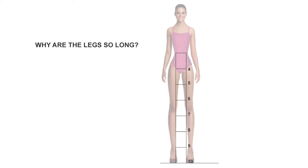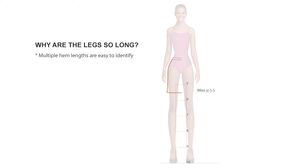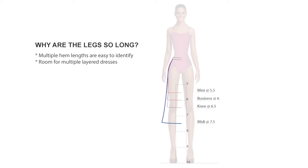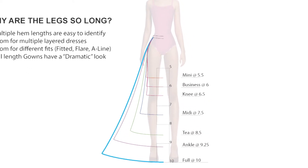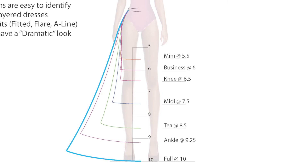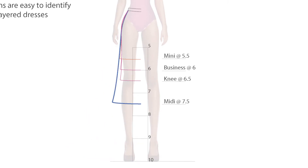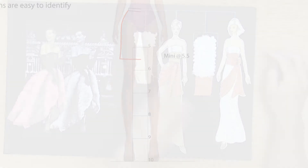If we look from four heads down, we have a mini skirt down at five and a half, and still room for a business skirt above the knee at six, and a knee-length skirt going down to six and a half. Moving into midi length and tea length, there's a nice differentiation between the middle of the calf and going below the calf, as well as room for multiple layer dresses on one garment. Moving all the way down to the ankle at nine and a quarter, there's lots of room for fit, flare, and A-line skirts, as well as the full dramatic look going all the way to the floor with lots of room to puff out off her hips. Having these different multiple lengths set at the different measurements makes it easy for the factory to recognize the exact hems you want.